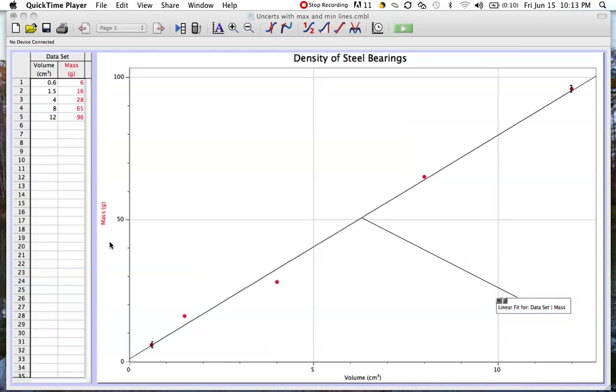To add our uncertainty bars, there are several different ways we can go. For something like our mass where we had a constant uncertainty with each measurement, it's quite easy.